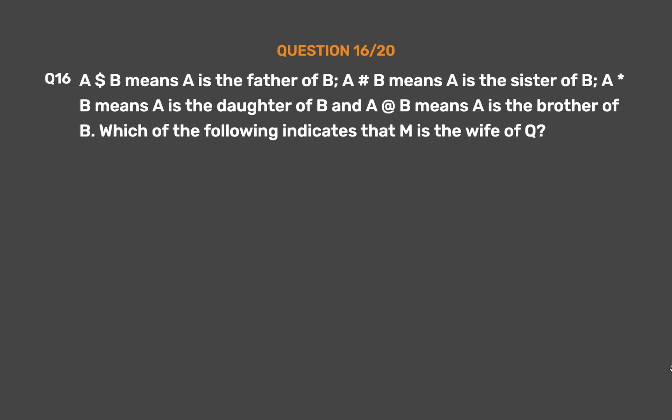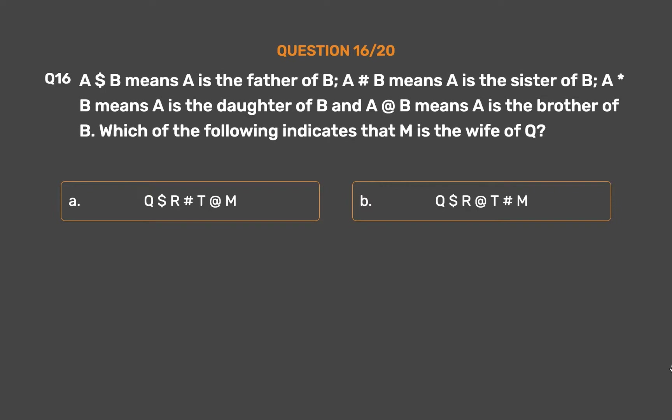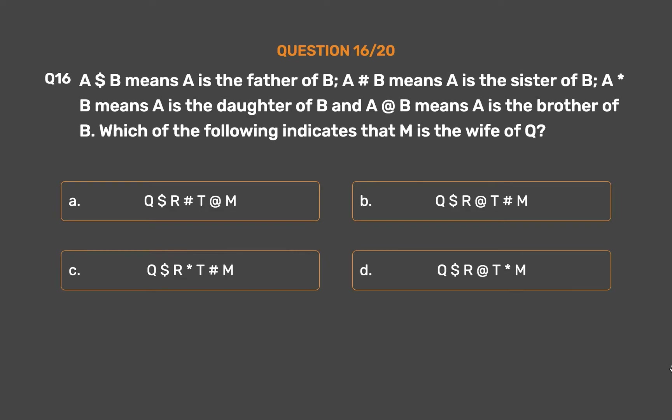Question number 16. If A $ B means A is the father of B, A # B means A is the sister of B, and A * B means A is the daughter of B, which of the following indicates that M is the wife of Q? Option A: Q $ R # T @ M. Option B: Q $ R @ T # M. Option C: Q $ R @ T # M. Option D: Q $ R @ T * M.